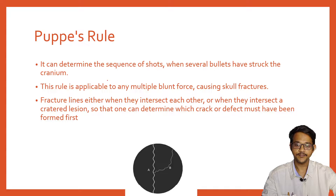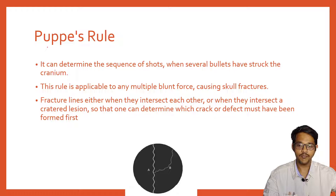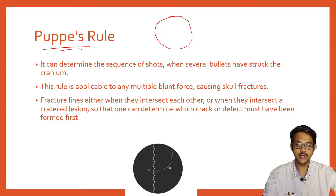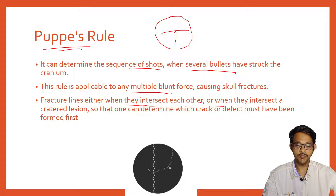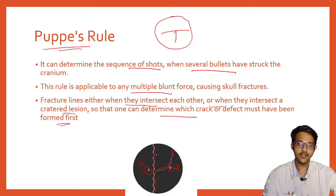To determine the direction of fractures, the PPS rule (Puppe's Rule) for skull fractures states that whenever one fracture is present, if another fracture appears it is stopped by the first fracture. This establishes a sequence of shots. When multiple forces cause skull fractures, the fracture line gets stopped when it intersects an earlier fracture. In a diagram, fracture A is the first and fracture B is stopped by A, indicating A occurred first and B second.